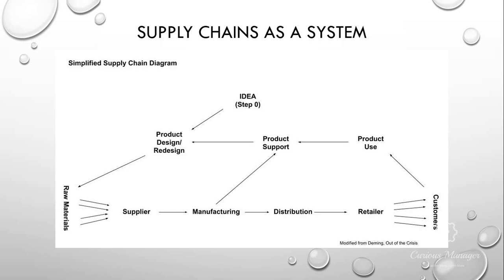Now, supply chain as a system. I use a modified Deming diagram to discuss how a supply chain works as a system. The supply chain starts with step zero, which is the customer demand itself — the thing that the customer wants. It can be a particular product the customer knows they want, or something new that your marketing department may foresee a demand for. This idea is behind the design of the product. Once you have this idea, it goes to product design and redesign. In chapter one, they talk about the development chain, which is all about developing the product we are going to create through the supply chain.